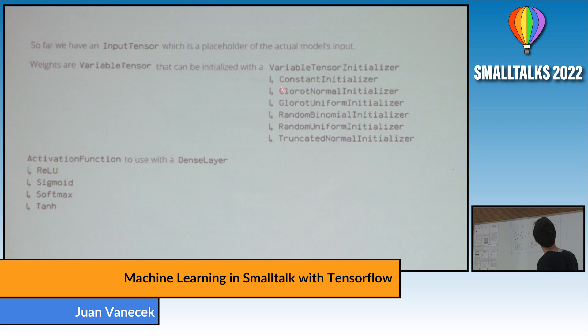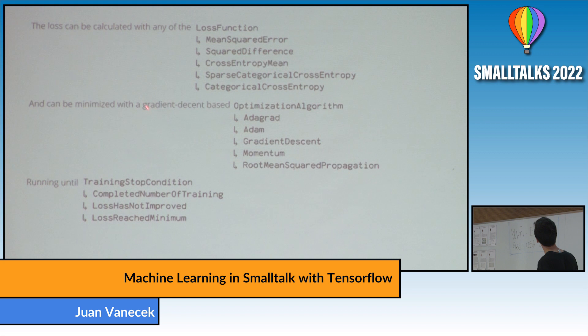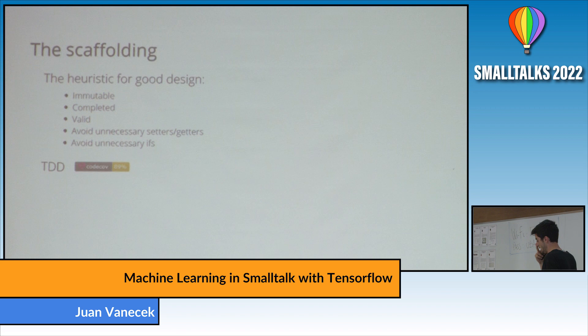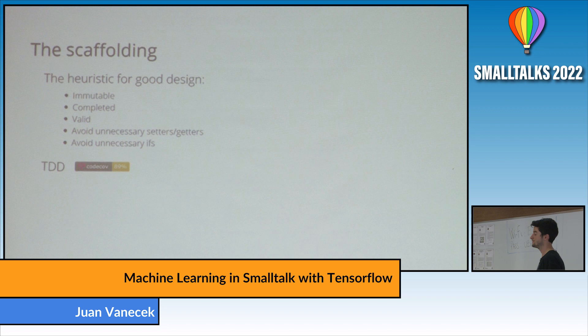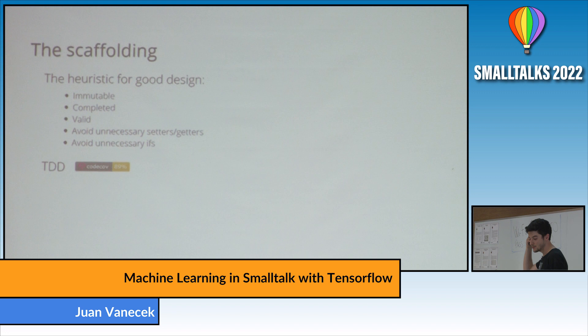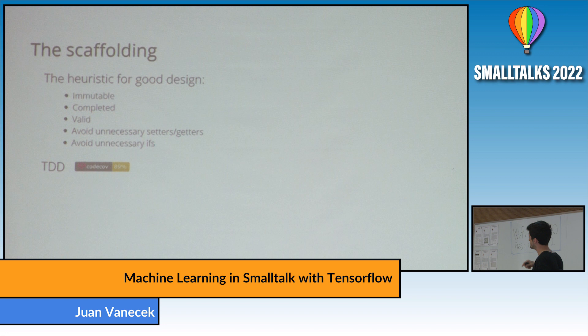Summarizing, the framework includes variables, tensors, initializers, activation functions, the dense layer, loss functions, optimization algorithms, and stop conditions — with more to come. The design rules I used emphasize immutable, complete, and valid objects, avoiding unnecessary setters, getters, and conditionals. This helps guarantee encapsulation. I also worked with TDD, and the code coverage is tracked on Pharo's GitHub and updated on every commit.